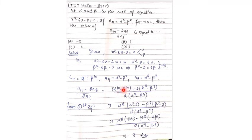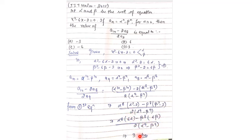Taking alpha^8 common from the numerator terms: alpha^8(alpha² - 2) - beta^8(beta² - 2). Using the first equation, alpha² - 2 = 6·alpha and beta² - 2 = 6·beta, we substitute to get alpha^8 · 6·alpha - beta^8 · 6·beta = 6(alpha^9 - beta^9). The factor 6·a9 in the numerator cancels with 2·a9 in the denominator, giving 6/2 = 3. So the answer is 3. These problems from 2013, 2014, and 2015 are important topics. If your doubts are cleared, please like and subscribe to the channel.